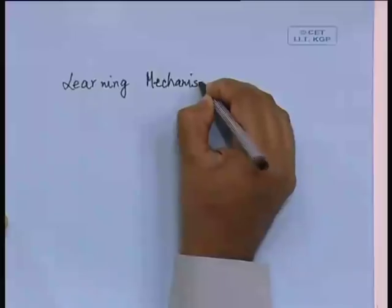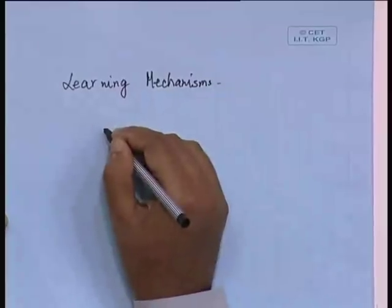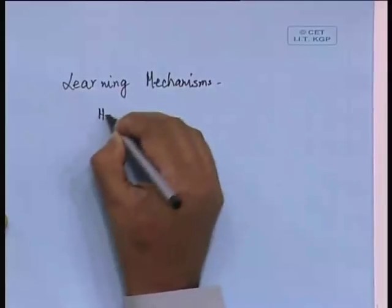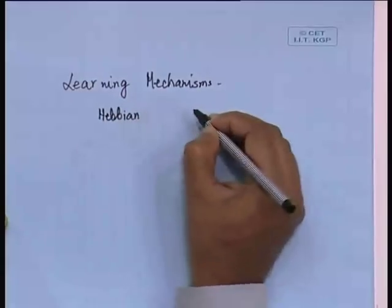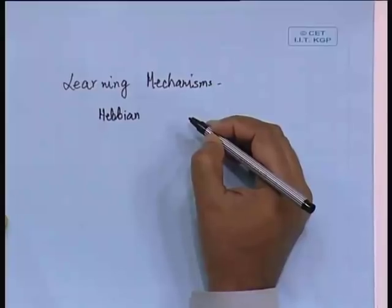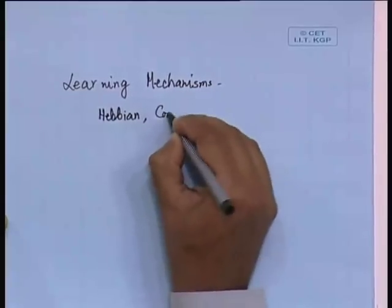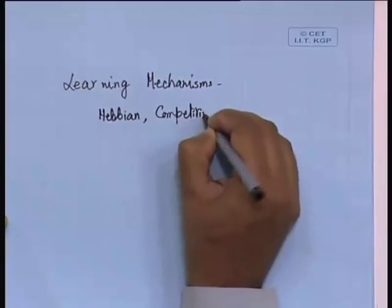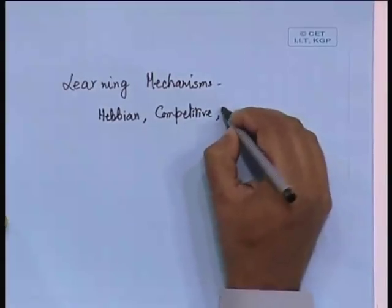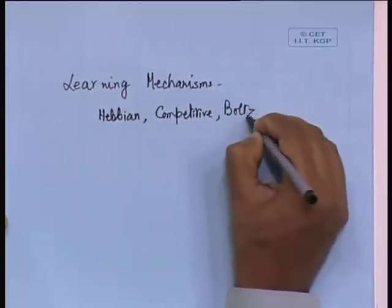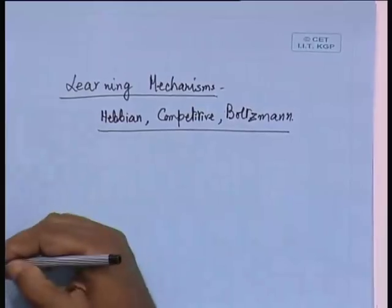We are going to continue with what we were discussing in the last class. This lecture will be on the learning mechanisms in neural networks, and especially we will consider the three types of learning mechanism: Hebbian learning, which we had left incomplete in the last class, competitive learning, and finally the fifth mechanism, which is the Boltzmann learning. This will be the scope of our discussion for today.